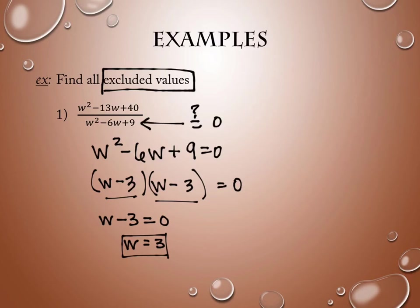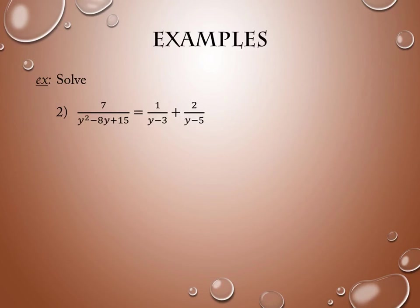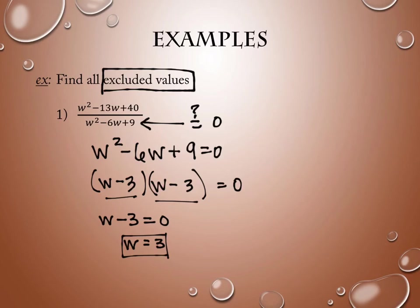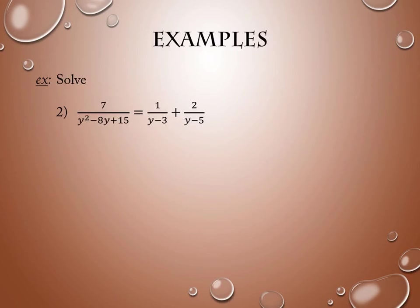Now the rest of my questions are going to say solve. This one said find excluded values, but it really just means solving when the denominator equals zero. The rest of them are actually solving equations. This one's not an equation — what's missing? An equal sign. It doesn't equal anything; it's just an expression. The rest of them we're working with are equations, and we've seen problems kind of like these before, but they weren't quite so complicated.